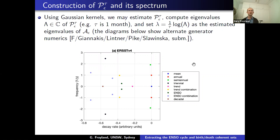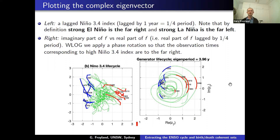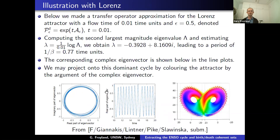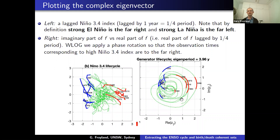Now I want to do something similar to what I did with Lorenz. On the left is the Niño 3-4 index: we plot that value on the x-axis and a lagged version by 12 months on the y-axis — so we're lagging by one-quarter period, trying to make a cycle out of the Niño 3-4 index. And it looks pretty awful.